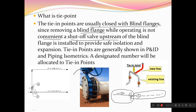That's why we are using a shutoff valve upstream of the blind flange. Wherever you are getting a tie point, you cannot just replace the blind flange and connect a new line. The flow should be stopped first, and then you can remove the blind flange and connect with the new line.